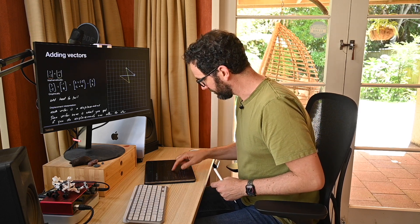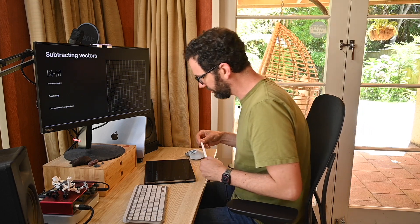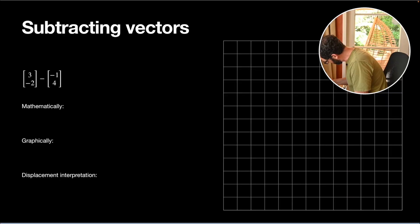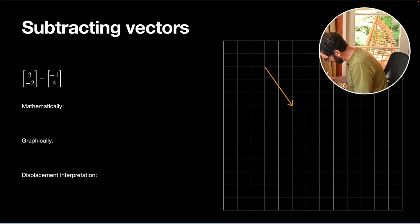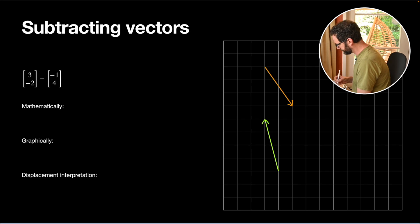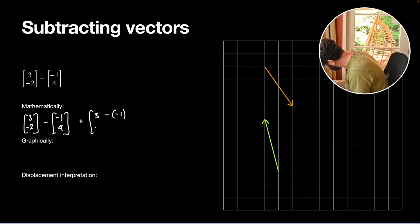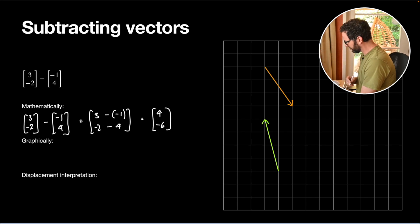What about subtracting? Let's take the same two vectors — 3, negative 2 and negative 1, 4. Subtracting them, we can just subtract the components individually: 3 minus negative 1 gives 4, and negative 2 minus 4 gives negative 6. So that gives us the vector 4, negative 6.